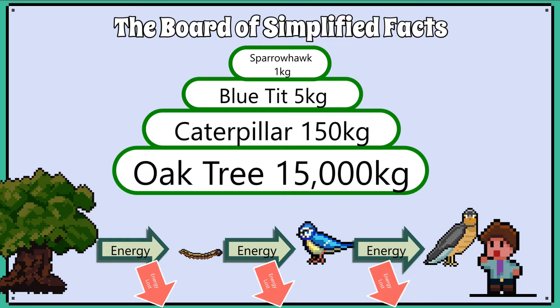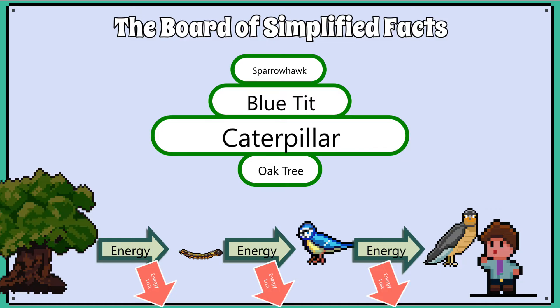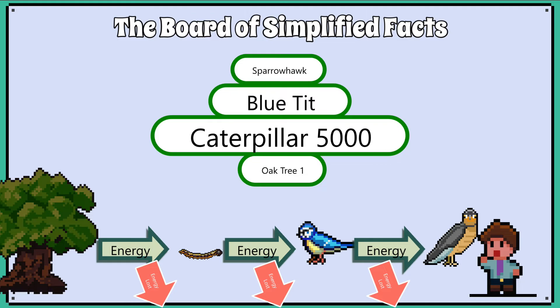If we now use the same food chain but construct a pyramid of numbers, we don't always get the traditional shape, because the number represents the number of individuals of that species. So there is only one tree in this food chain, 5,000 caterpillars, 50 blue tits, and 2 sparrowhawks. You need to be able to label and construct your own pyramids of numbers and pyramids of biomass for your exam.